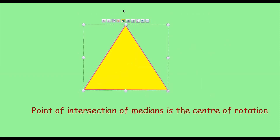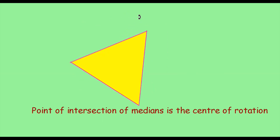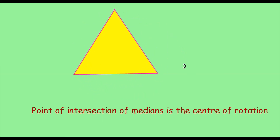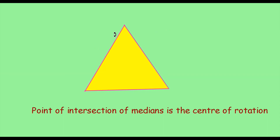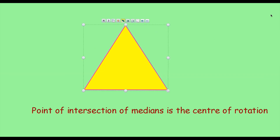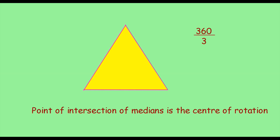Let me rotate it. Here you can see: 1, then 2, then 3 — three times the equilateral triangle looks the same in a full turn. So the order of rotation is 3. In 360 degrees, three times it looks exactly the same, so the angle of rotation is 360 divided by 3, that is 120 degrees.